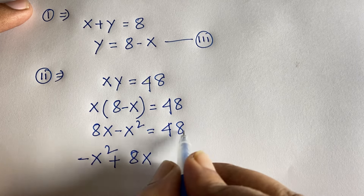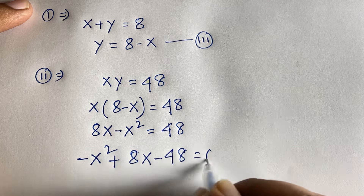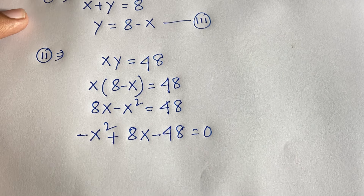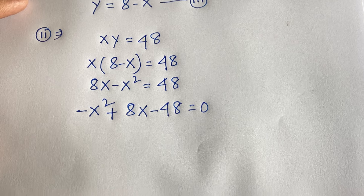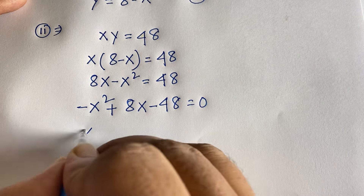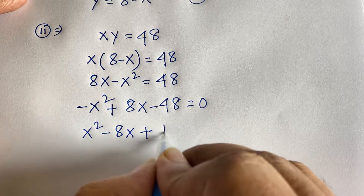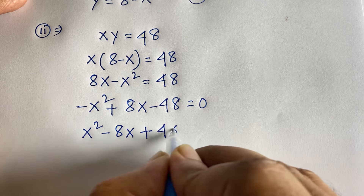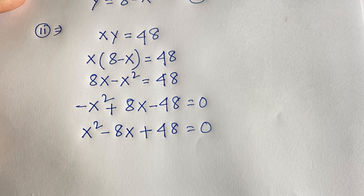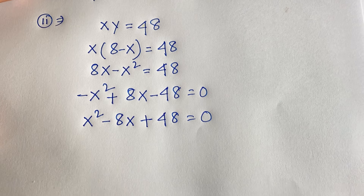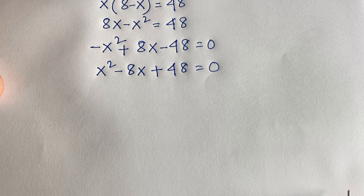This equation becomes x squared minus 8x, and if I move 48 to the left side it becomes negative 48, equal to 0. Then if I multiply both sides by minus 1, we find x squared minus 8x plus 48 equals 0.